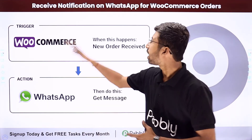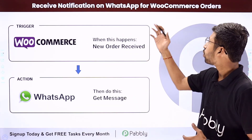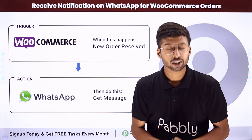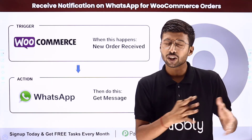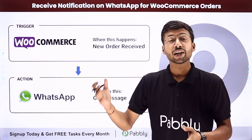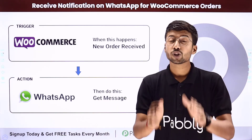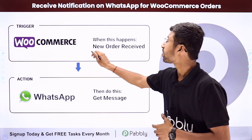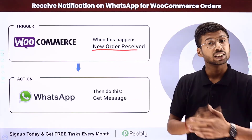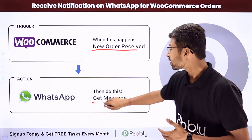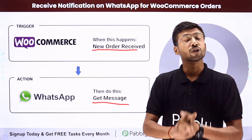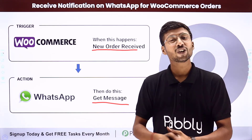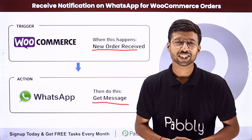In this video, we will learn how to receive notifications on WhatsApp for WooCommerce orders. Suppose you are a WooCommerce store owner and you want to get notified on WhatsApp whenever you receive a new order. You can get this notification automatically. The trigger will be receiving a new order in WooCommerce, and the action will be receiving a WhatsApp message with the order details on your number.